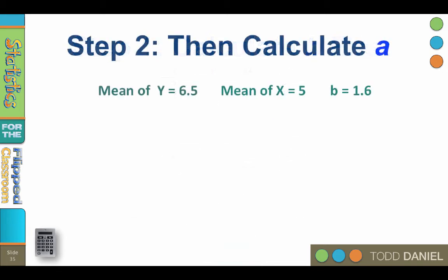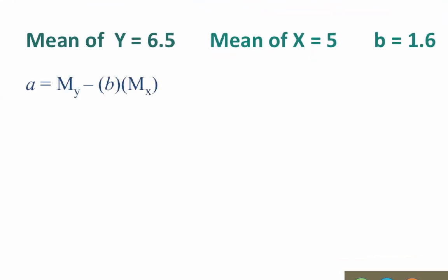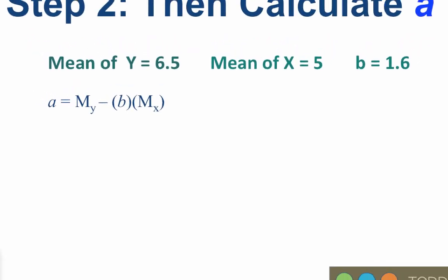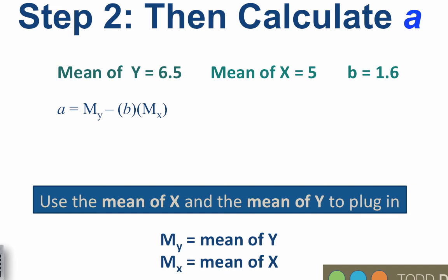For step two, we can use this 1.6 and the means of x and y to calculate a. The formula for a is actually the general formula for a straight line, only we have done some algebra to get a on one side of the equation. We plug in the means of x and y, and the 1.6 for b. All that remains is to multiply b and x, and subtract from a, leaving us with a negative 1.5. So a equals negative 1.50.